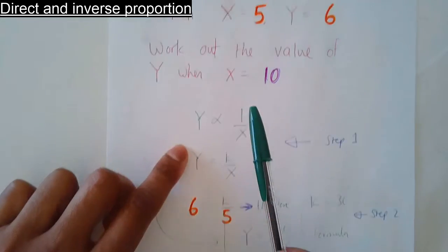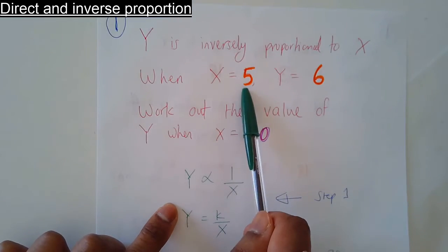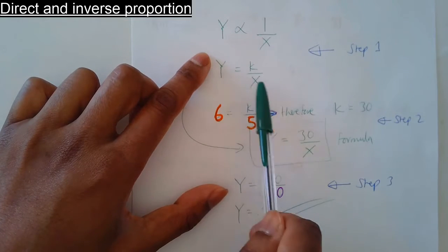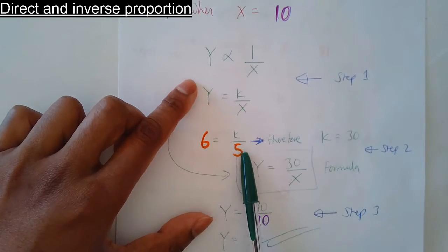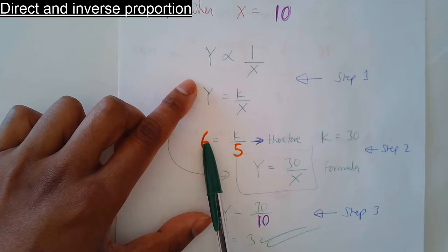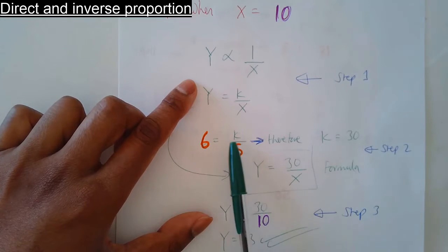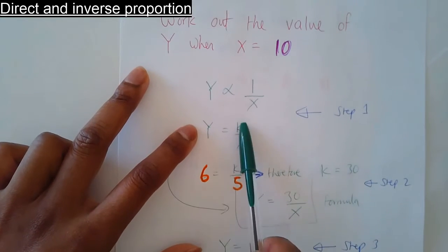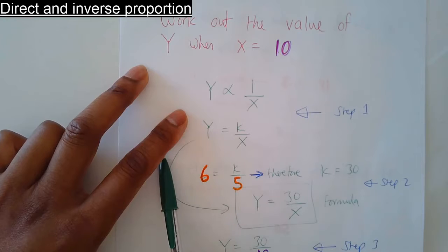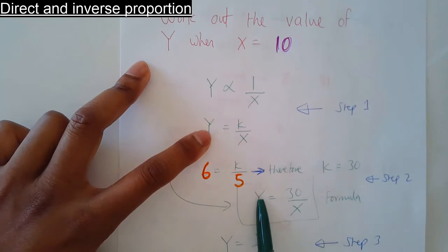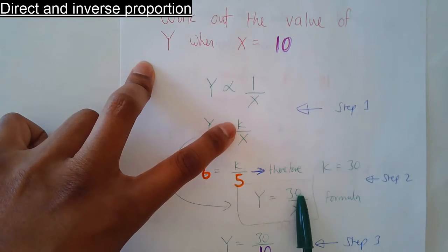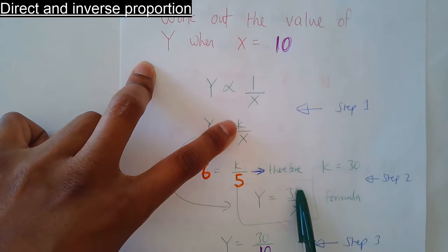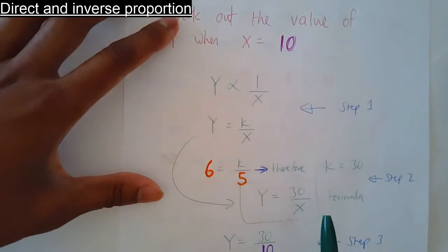Where did the 6 and 5 come from? Right here: x equals 5, y equals 6. Something divided by 5 to give me 6 — that's 30. 30 divided by 5 gives me 6, so k is 30. We've just found the value of k, so the formula now is y equals 30 over x. That's the formula I'm going to use to answer this question.